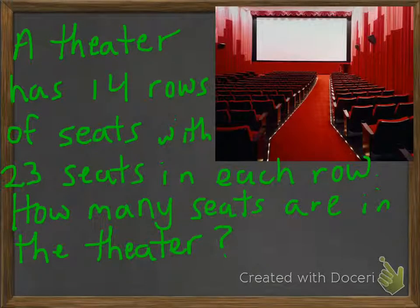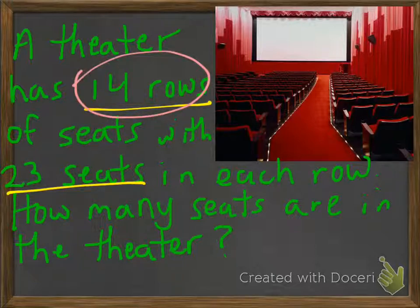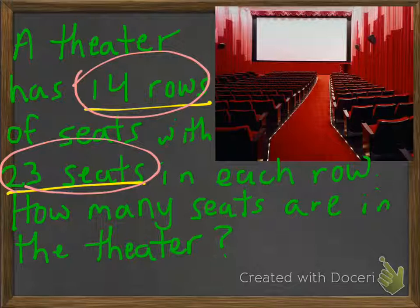Let's say a theater has 14 rows of seats with 23 seats in each row. How many seats are in the theater? So let's take a look at that again. The theater has 14 rows of seats with 23 seats in each row. How many seats are in the theater? That's our question.